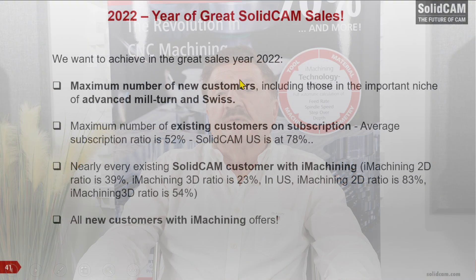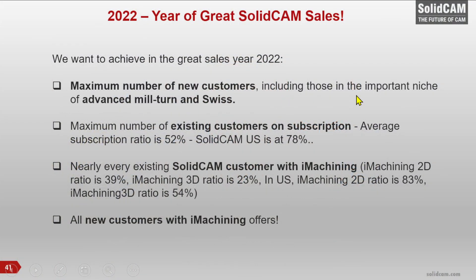Our targets for 2022: maximum number of new customers, including those in the important niche of advanced mill-turn and Swiss. Maximum existing customers on subscription — our worldwide average subscription rate is 52%; SolidCAM US has 78%, so there is real room to grow. We want nearly every existing SolidCAM customer to have iMachining. Today iMachining 2D ratio is 38% and iMachining 3D is 23% worldwide; in the US, iMachining 2D is 83% and iMachining 3D is 54% — more than double the worldwide average. All new customers should receive an offer that includes iMachining — we don't want them to get SolidCAM without benefiting from iMachining.